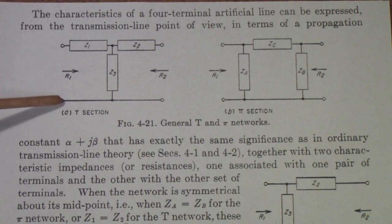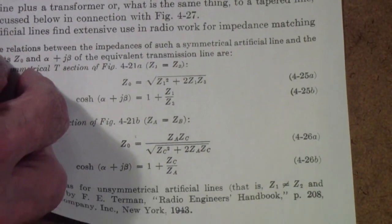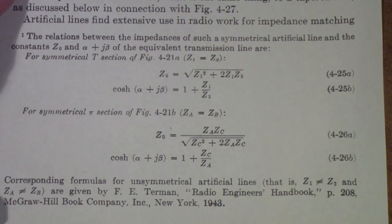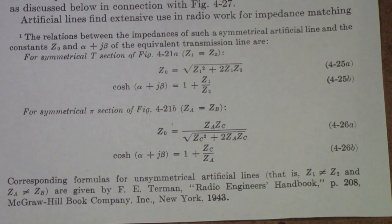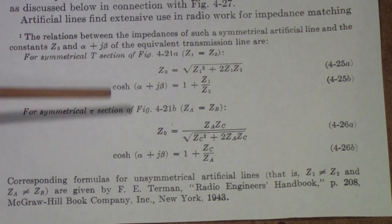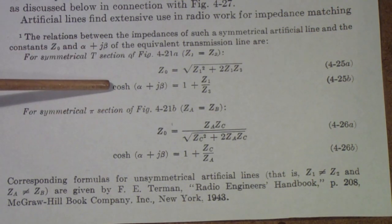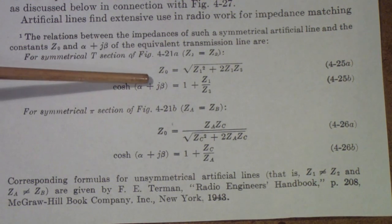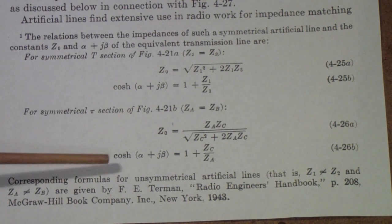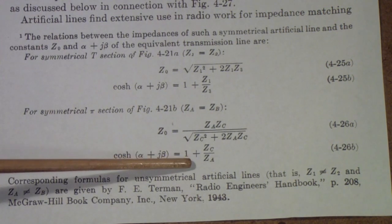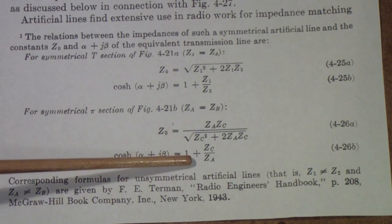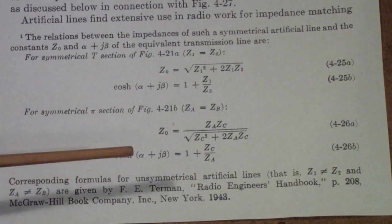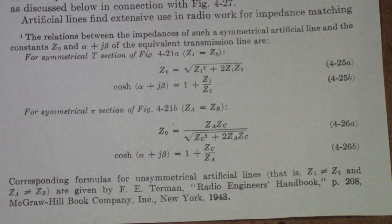Here, for example, are some of the calculations you need to be able to do — this is for a T section, this is for a pi section. You may notice that here you have cosh, which is the hyperbolic cosine of a function, and here is the hyperbolic cosine of a slightly different function. This is for a symmetrical pi section, this is for a symmetrical T section, but they both need the calculation of the hyperbolic cosine.